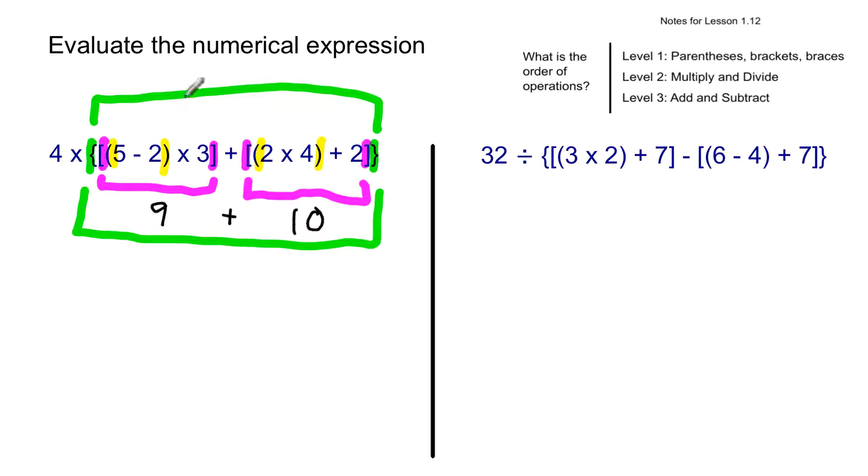So the green group is 9 plus 10. And we'll multiply all of that times 4. So if I rewrite the expression down here, it's 4 times whatever is in this green group still. 9 plus 10 is 19. And then, hopefully, you can do 4 times 19. If you can't do that in your head, do it off to the side. But 4 times 19 equals 76.